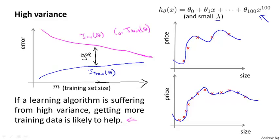On the previous slides I drew fairly clean, idealized curves. If you plot these curves for an actual learning algorithm, sometimes you will see curves like what I've drawn, although sometimes they're a little bit noisier and messier. But plotting learning curves like these can often help you figure out if your learning algorithm is suffering from bias or variance or even a little bit of both. When I'm trying to improve the performance of a learning algorithm, one thing I'll almost always do is plot these learning curves.